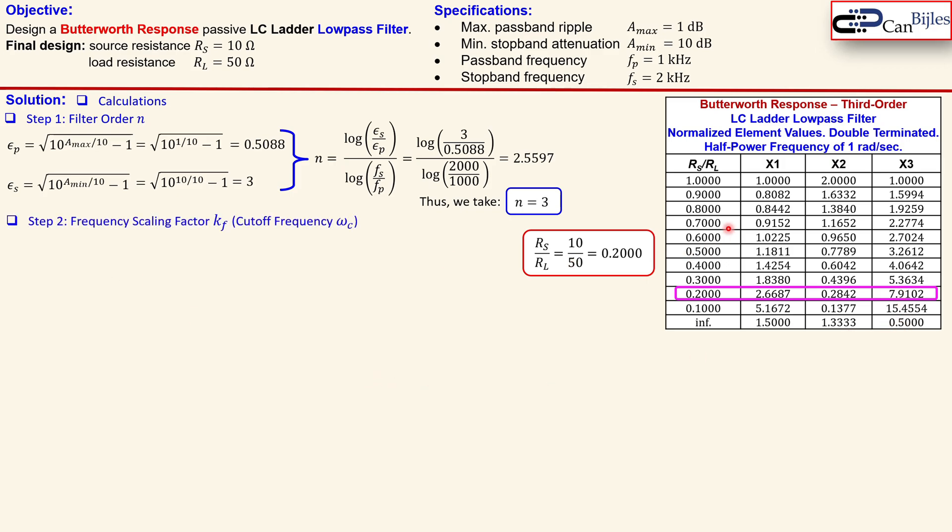Before we look at these coefficients, let's first calculate the frequency scaling factor kf, which is also the cutoff frequency for this filter. That is given by this expression - we need to have the omega p which is 2 pi times the passband frequency, and we also have the epsilon p and also the filter order. So we can substitute everything, we get this in radians per second which is then 1253 hertz, which is our cutoff frequency.